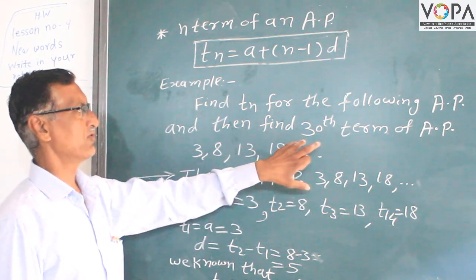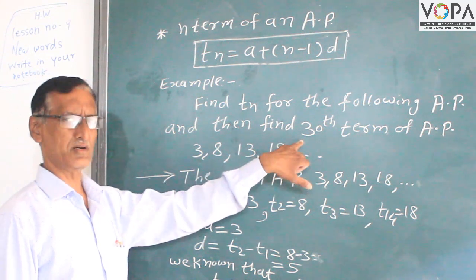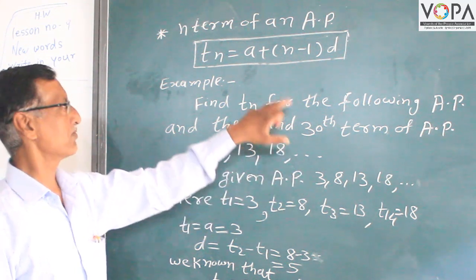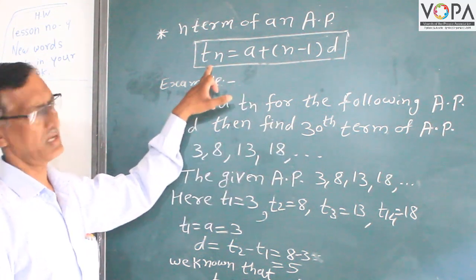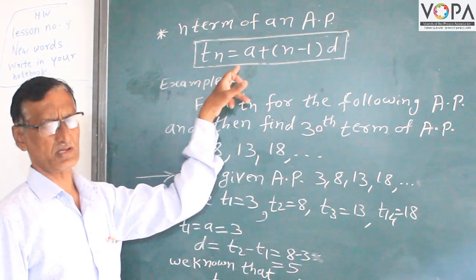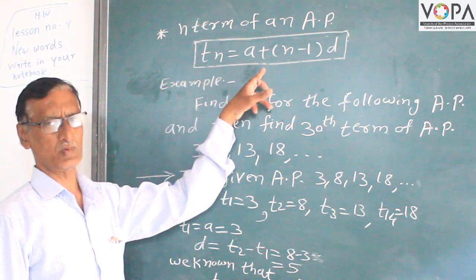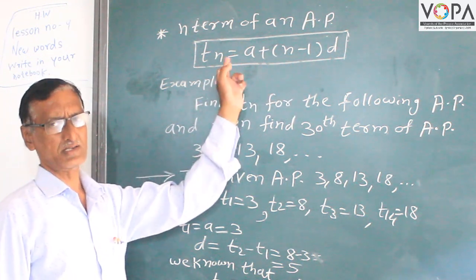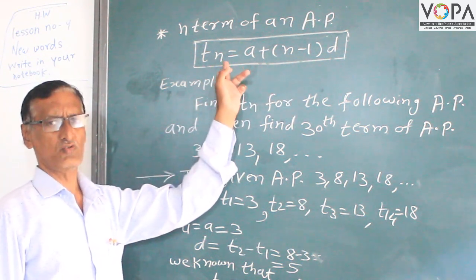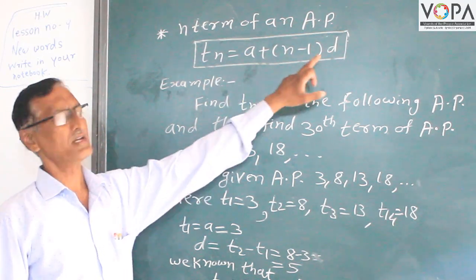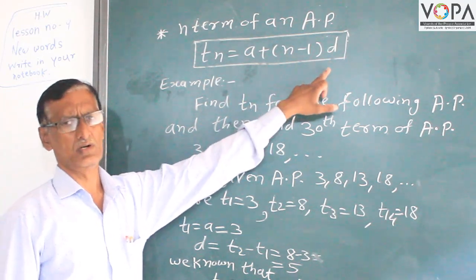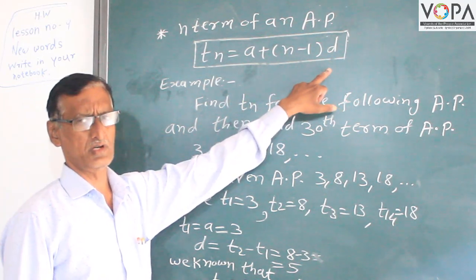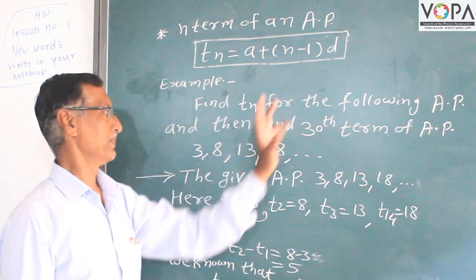Similarly, the 14th term, 15th term, and 16th term are calculated using the formula tn is equal to a plus n minus 1 into d. Here, a is equal to the first term, and d is equal to the difference between two consecutive numbers.